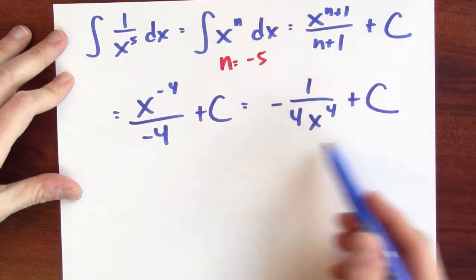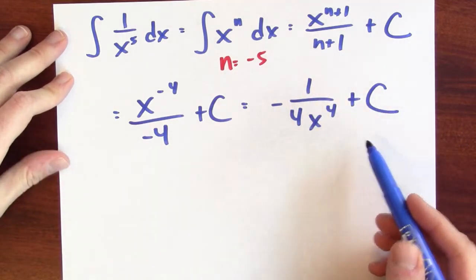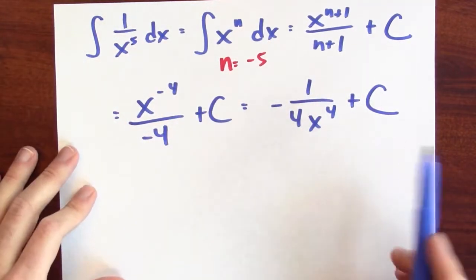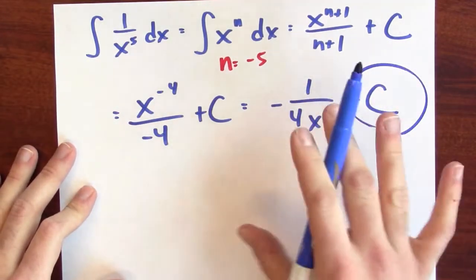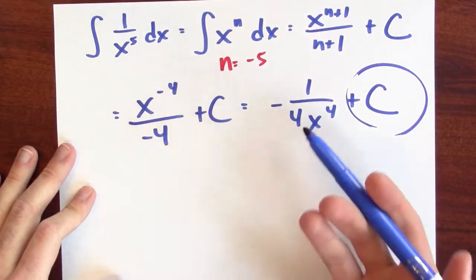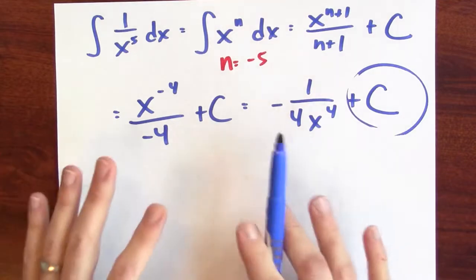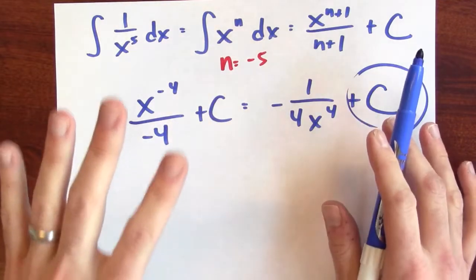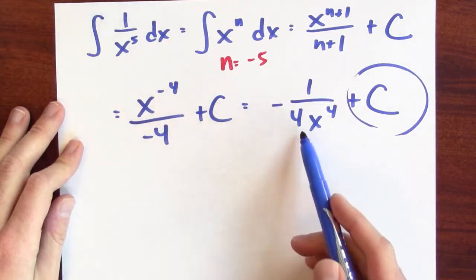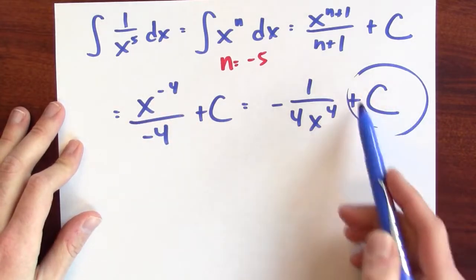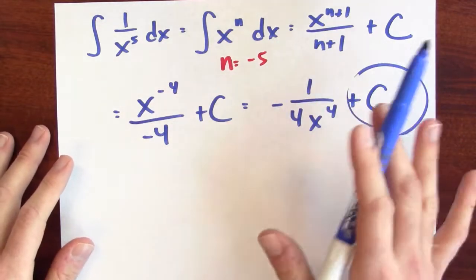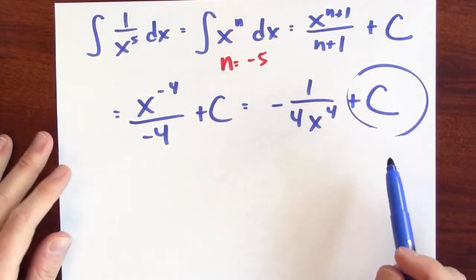I'm claiming that this is the most general anti-derivative. The issue to worry about is that this plus c is really hiding something — it means something that's locally constant, not necessarily the same constant on the right and left-hand side of 0, because this function is not defined at 0. So you could make the constant different on either side of 0. That's a subtle point, but it's worth pointing out.